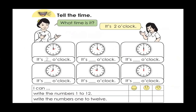Now let's tell the time. What time is it? It's two o'clock. What time is it? It's four o'clock. What time is it? It's six o'clock. What time is it? It's eight o'clock. What time is it? It's ten o'clock. What time is it? It's twelve o'clock. Very good.